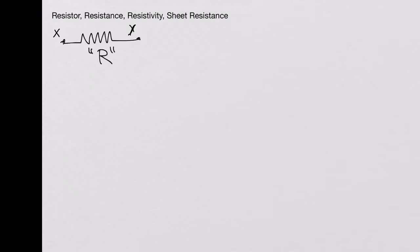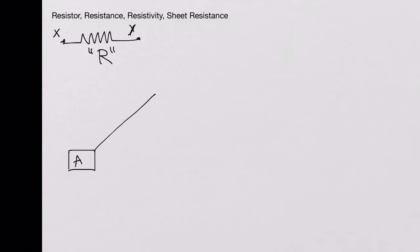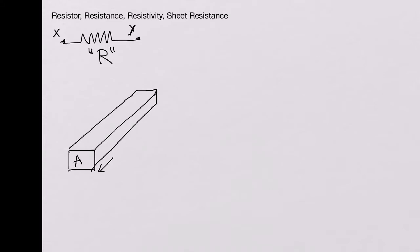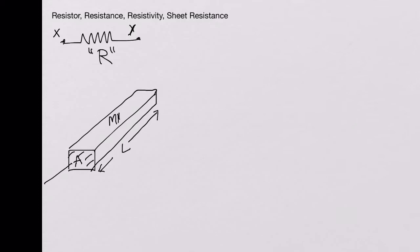Now we look into what resistance is. Take any material with a cross-sectional area A and a length L. This is made up of material M1. To find the resistance between points X and Y, that resistance R is proportional to the length.